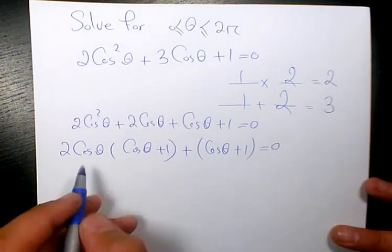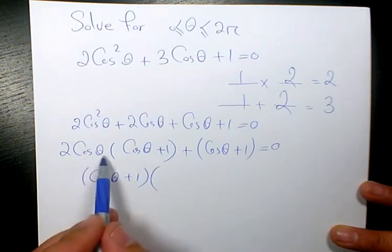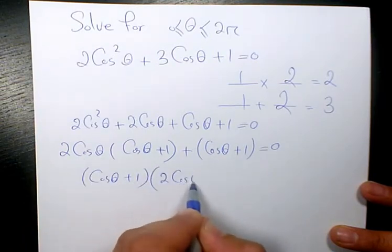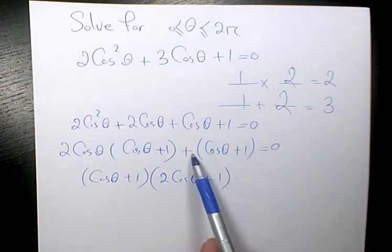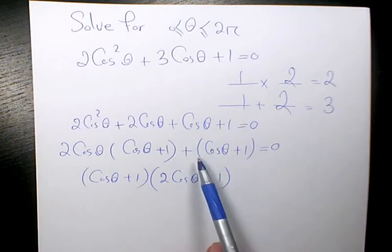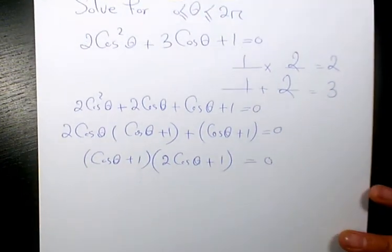Then I factor cosine theta plus 1. And this one, it will be 2 cosine theta plus 1, which is the coefficient of this bracket. It's plus, it means that it's plus 1 equals to 0.